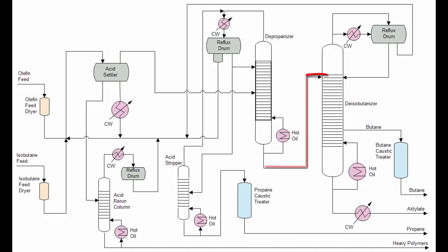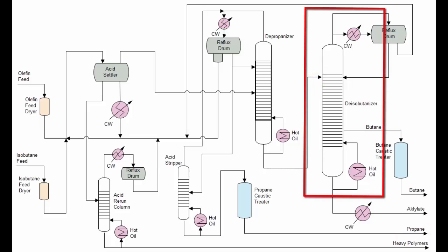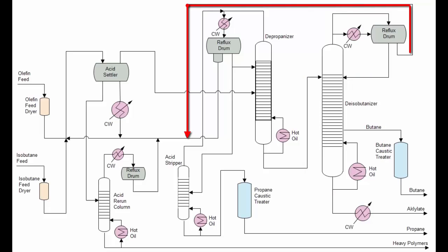The bottoms is then sent to a de-isobutinizer. It's a unique distillation tower that separates out three different products: isobutene at the top for recycle back to the reactor feed, butane vapor as a separate product, and the main product, alkylate, which is high-value gasoline blending material.